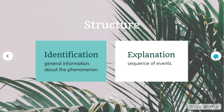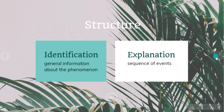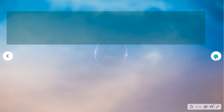For its structure, there are two stages. The first is identification — you may find in other sources the first stage is also called phenomenon or general statement. The content, however, is the same: it gives general information about the phenomenon.